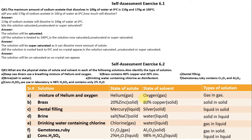For brass: 20% zinc in solid form is the solute, and 80% copper in solid form is the solvent. The type of solution is solid in solid. For dental filling: mercury in liquid state is the solute, silver in solid state is the solvent, and the type of solution is liquid in solid.